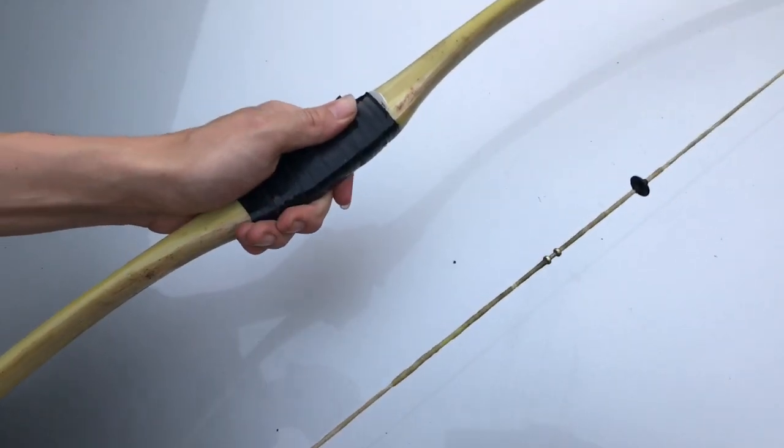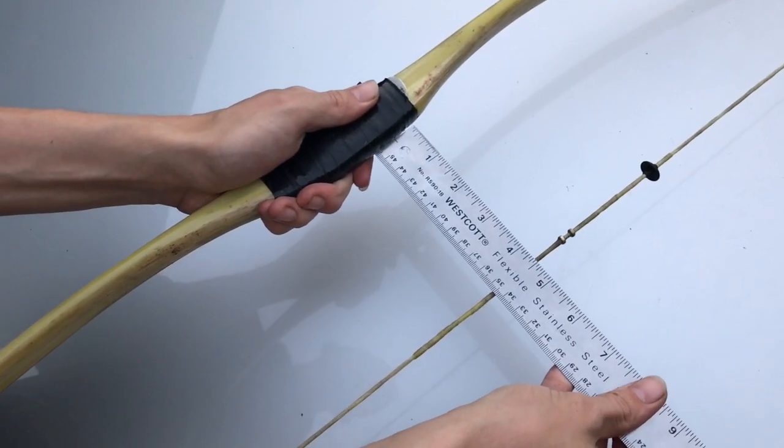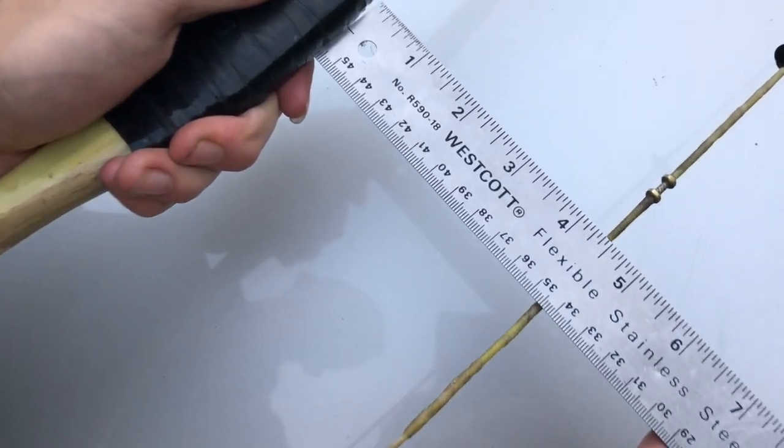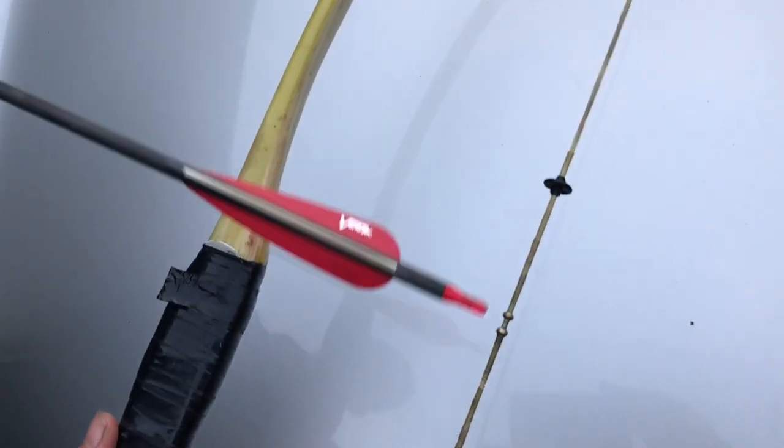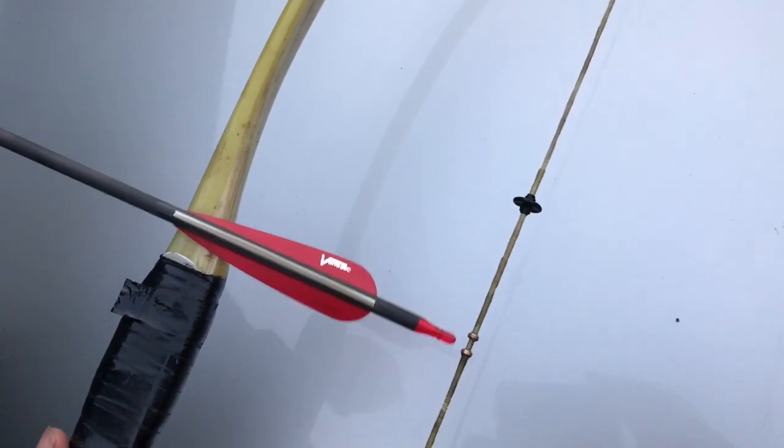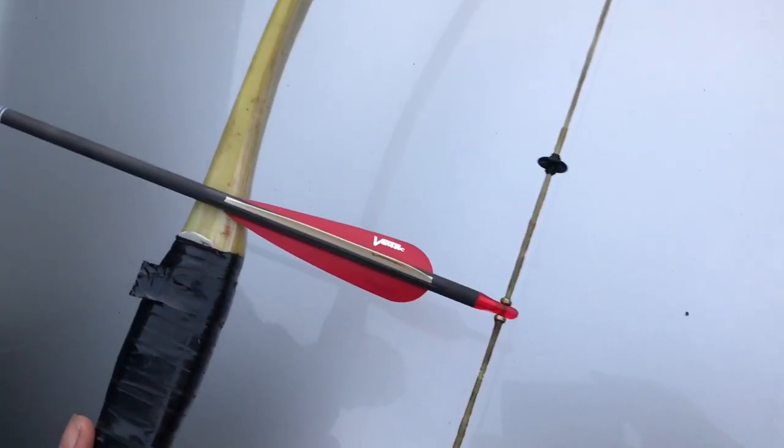Now that we have tied these two knots, we're going to take another measurement: four and a half inches. That's quite a distance for only two knots. Now we will nock an arrow and see if our brass beads are in the right place.